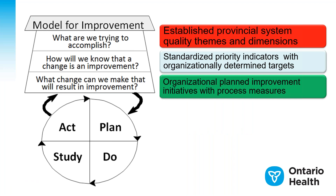Here is how the Model for Improvement maps to the quality improvement plan. As you can see, there is a perfect match-up between the three fundamental questions of the Model for Improvement and the elements of the QIP. In the QIP, "what are we trying to accomplish?" is the provincial quality themes and dimensions. "How will we know that changes are an improvement?" is reflected in the QIP as standardized priority indicators with organizationally determined targets. And "what change can we make that will result in improvement?" in the QIP is organizational planned improvement initiatives with process measures.